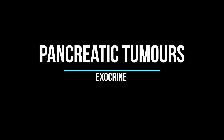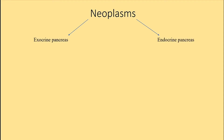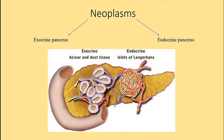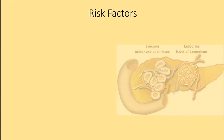Hey guys, it's Layla. Today we'll speak about pancreatic tumors, specifically the exocrine ones. The neoplasms of the pancreas include exocrine tumors and endocrine tumors. The exocrine pancreas relates to acinar and duct tissue, while the endocrine involves the islets of Langerhans and the hormonal system. The exocrine function covers pancreatic secretions and digestive enzymes.